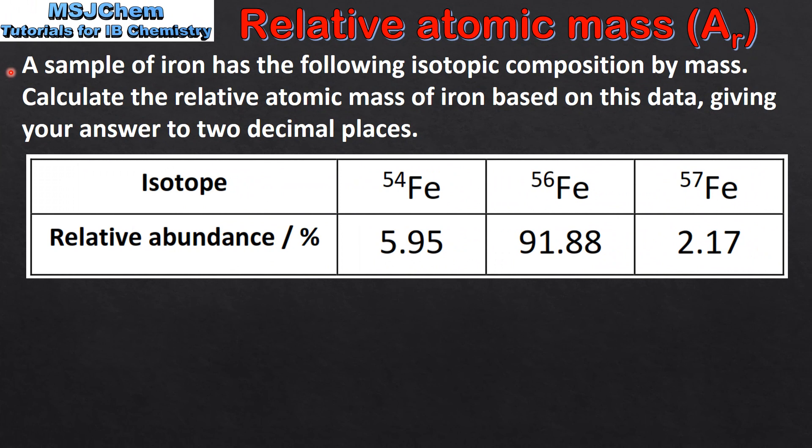A sample of iron has the following isotopic composition by mass. Calculate the relative atomic mass of iron based on this data giving your answer to two decimal places. In this table we are given the isotopes and their relative abundance.